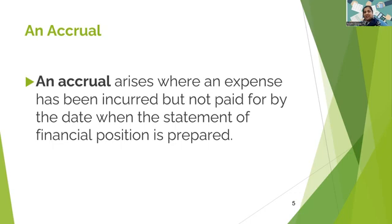The opposite of capital expenditure is revenue expenditure. Revenue expenditure is any expenditure incurred on the day-to-day running of the business — everyday expenses like payment of electricity bills, payment of salaries, payment of water bills, or buying stationery for use in the office. For example, if you buy a delivery van that's capital expenditure, but when you buy fuel — petrol or diesel — to run that delivery van, that is revenue expenditure.